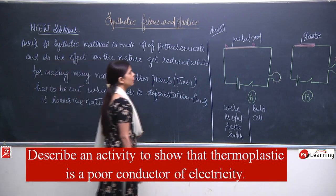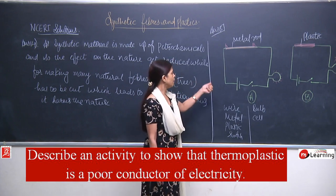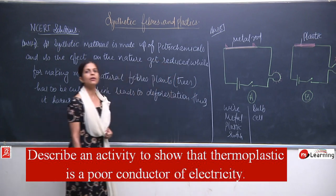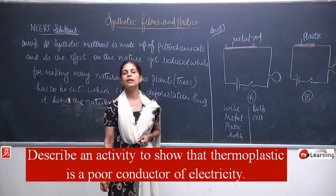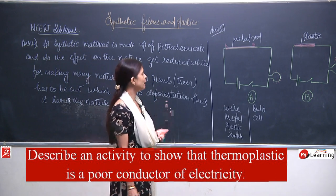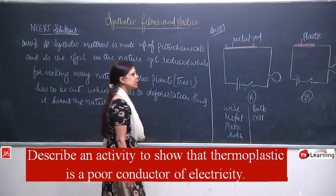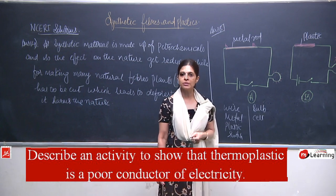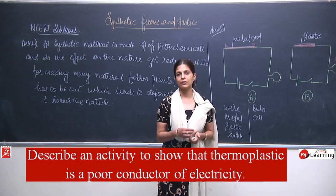This activity proves two things: the bulb in circuit A glows because the metal rod allows current to pass; the bulb in circuit B does not glow because plastic is a bad conductor of electricity and does not allow current to pass. This is how we prove through this activity that plastic is a bad conductor of electricity.